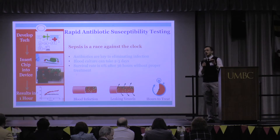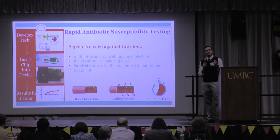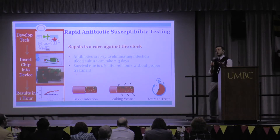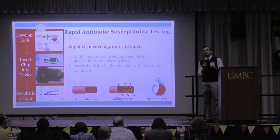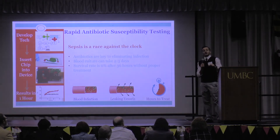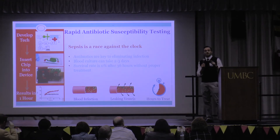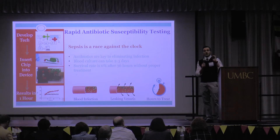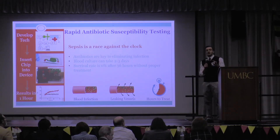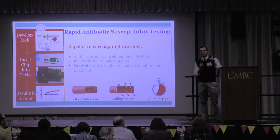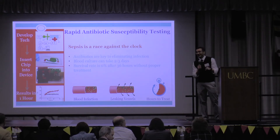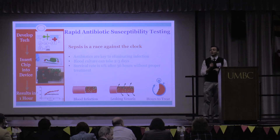Now, I want you to think of the 16-seed team as a sepsis patient. Sepsis is a blood infection — at least it starts as a blood infection — and it is very, very deadly. What makes it even worse is, if you don't give the patient proper treatment, after 36 hours, the survival rate is less than 1%. While it can be done, not so many people are so lucky.